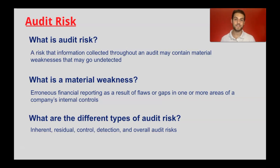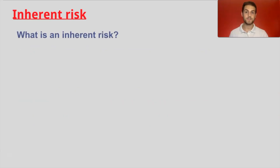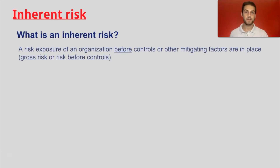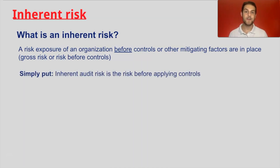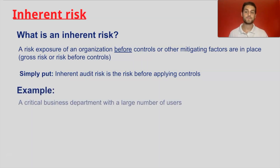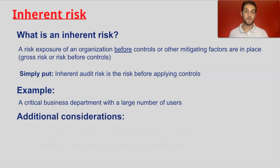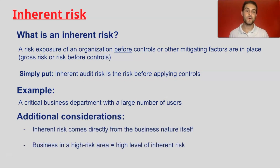Starting with inherent risk — what is inherent risk? Inherent risk is the risk exposure of an organization before controls or other mitigating factors are in place. Simply put, inherent risk is the risk before applying controls. For example, a critical business department with a large number of users has inherently more risk due to that large number of users.